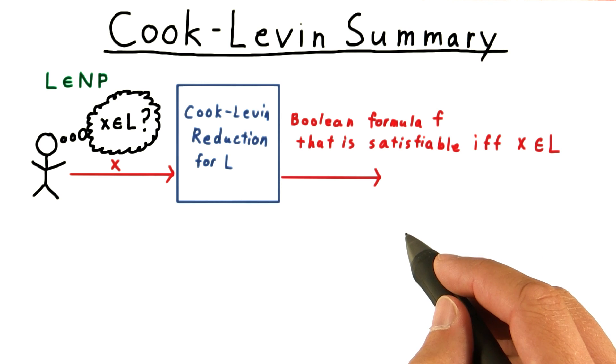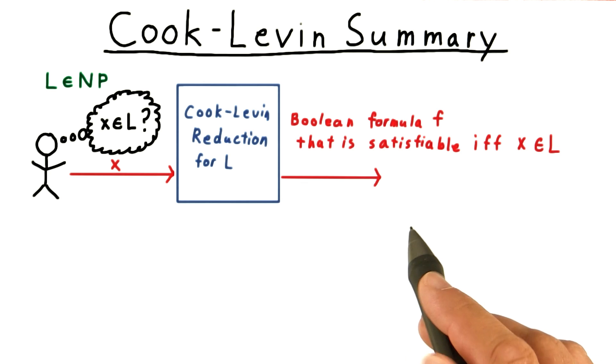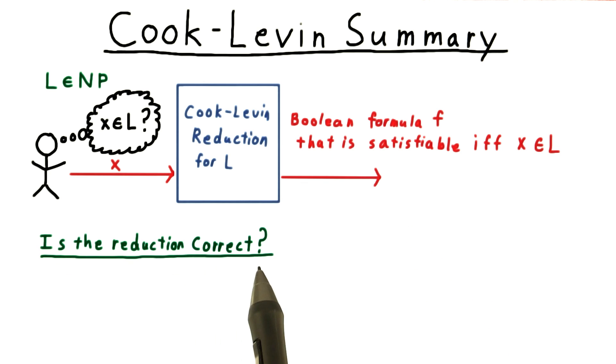Only two questions remain. Is the reduction correct? And is it polynomial in the size of the input? Let's consider correctness first.